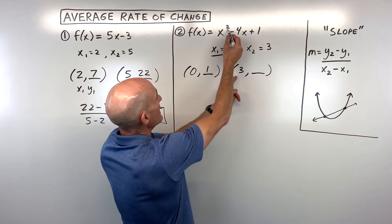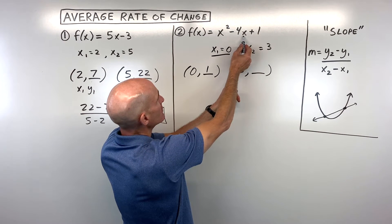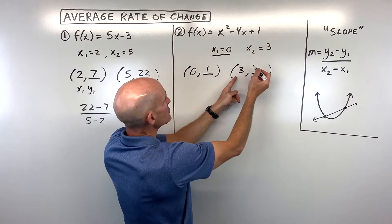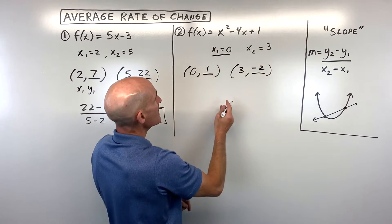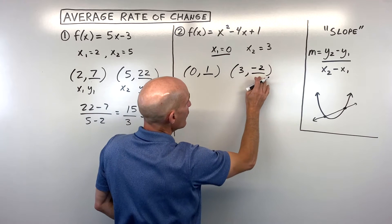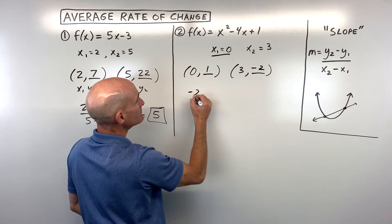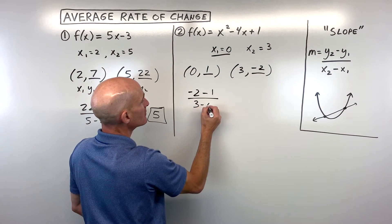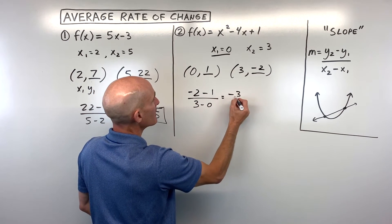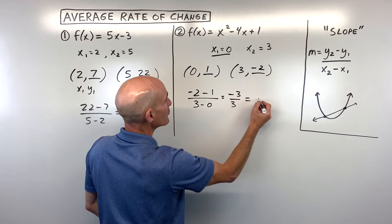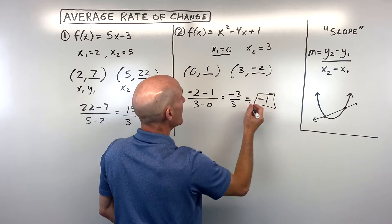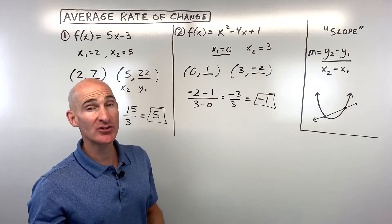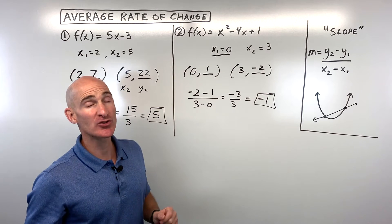If we put 3 in, we get 9 minus 12, which is negative 3, plus 1 is negative 2. Now if we do our slope formula, y2 minus y1 over x2 minus x1, that comes out to negative 3 over 3, which is equal to negative 1. So that would be the average rate of change, or the slope, between those two points.